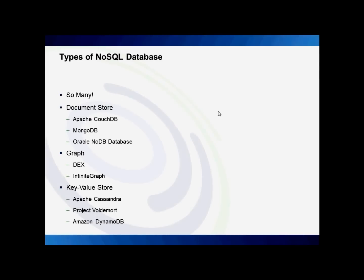There are many different types of NoSQL databases. You have the document store type, where instead of rows in a table, each document is a row in itself. In this case, a document isn't something like a Word doc or an Excel spreadsheet — a document literally just means a row with different values.